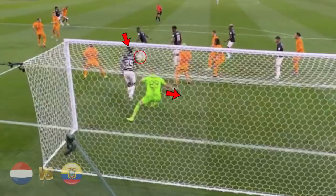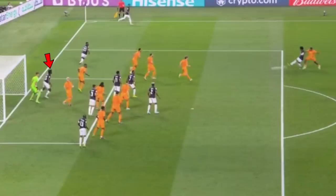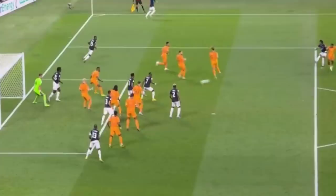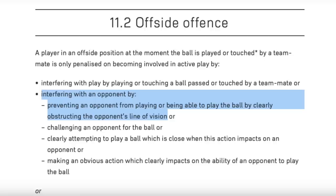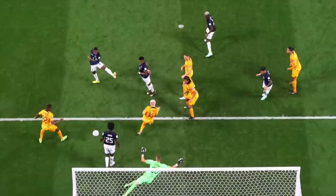Netherlands vs Ecuador, and Estupinian deflects the ball into the net for Ecuador, but the goal is ruled out by VAR for offside against Poroso. From the first shot, Poroso is impacting the Dutch keeper's line of vision, but from the deflection the keeper is already diving and can clearly see the ball, so Poroso arguably doesn't impact him at that point. That said, the offside law doesn't require the keeper to be able to save the ball if a player is offside — he only has to be impacted, but that is up for debate. This was a very harsh decision, and we conclude that the officials got this one wrong.